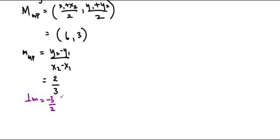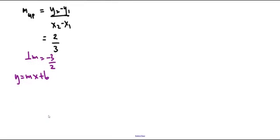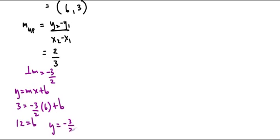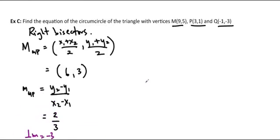We're going to plug this into y equals mx plus b. So 3 equals negative 3 over 2 times 6 plus b. This ends up being negative 9, so moving it over: 12 equals b. We get the equation y equals negative 3 over 2x plus 12. That's my first perpendicular bisector. I'm going to do another one — I'm keeping it straight by putting a subscript letter there.